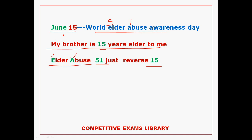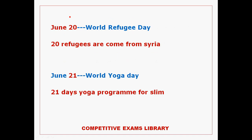Next, June 20th — World Refugee Day. So Syria — 20 refugees come from Syria. So every country has 20 refugees, all of Syria. I got to pick on 20 refugees. So 21 days yoga program for slimming — 21 days yoga program for slimming and a program start.